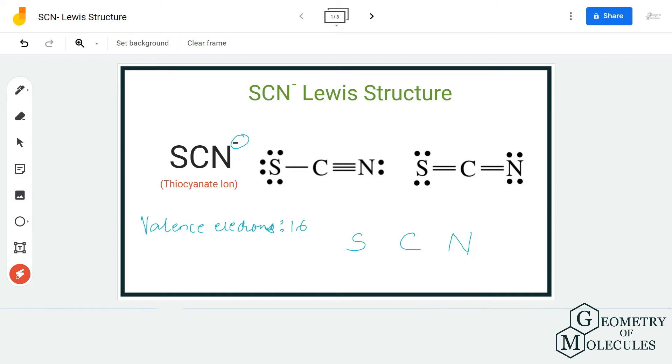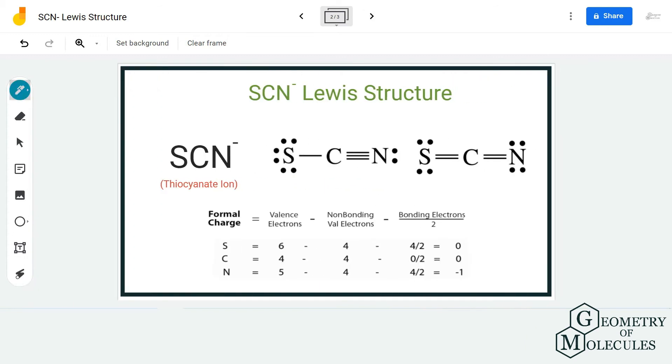Here in this slide I am going to find out the formal charge for this structure in which there are two double bonds, one between carbon and sulfur and the other one between carbon and nitrogen. We have the formal charge of zero on both sulfur and carbon and nitrogen has a negative charge, and that is fine because we have a negative charge on this ion.